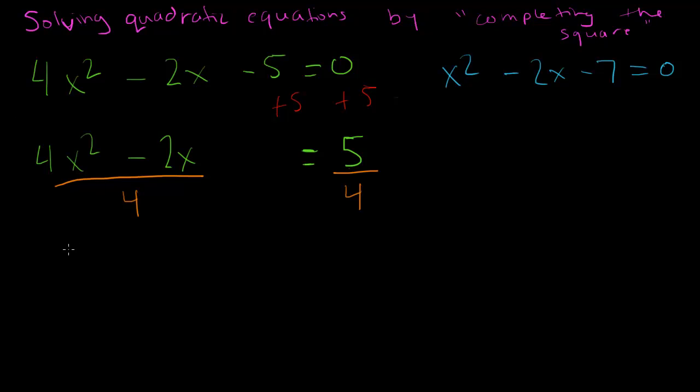And then if I do that on this line, I get 4x² divided by 4 is just x², or 1x², minus 2x divided by 4 is 1/2 x. And again, I'm going to leave this space here. You'll see why in just a moment. And then we have over here just 5/4.